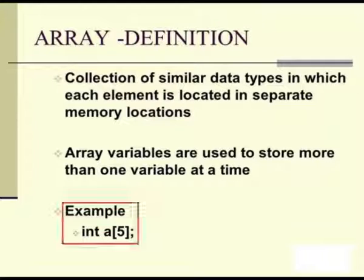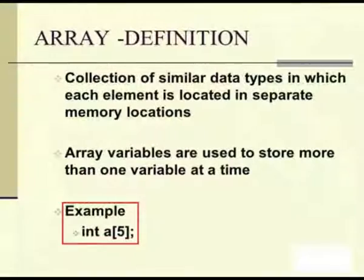If you say int a, that variable a can hold only one value — either 5 or 10 or any digit. Whereas if you declare an array variable int a[5], then you can store around 5 values in that same variable a. That means variable name a can hold at a time 5 values in separate memory locations. Accessing them is also independent of the other variables. At the same time, using the same variable name without wasting much space, you can hold 5 values.